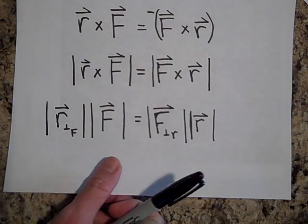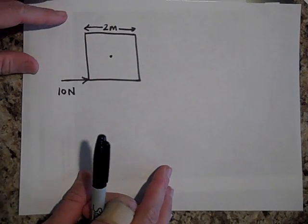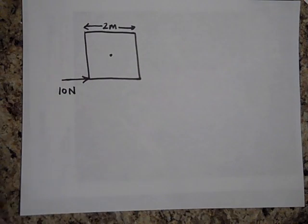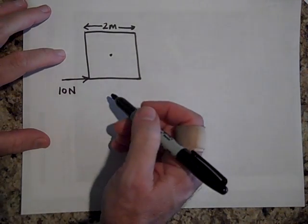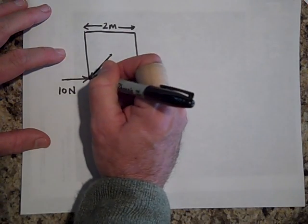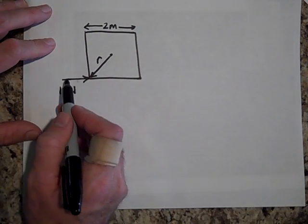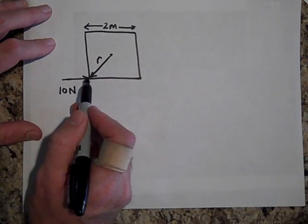Now, why is that important? Well, because sometimes to compute torque, it can be pretty tough if you're trying to do R cross F. And let's see, here's R, that's the vector R and this is the force, 10 newtons this way.